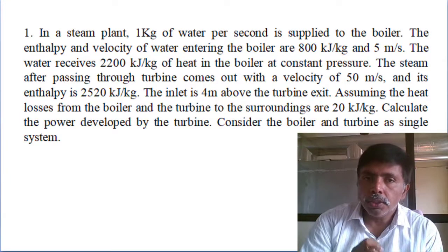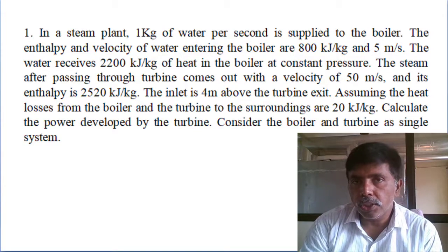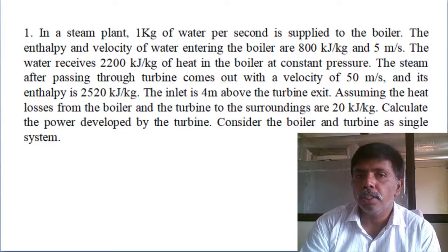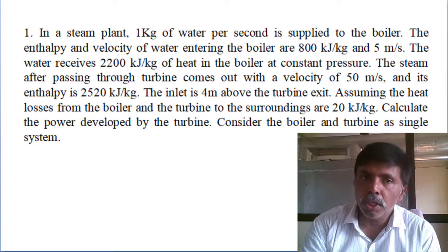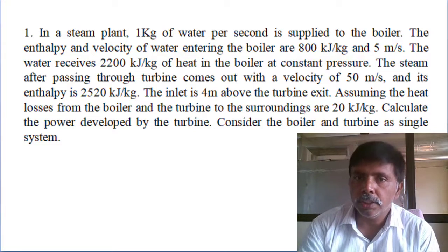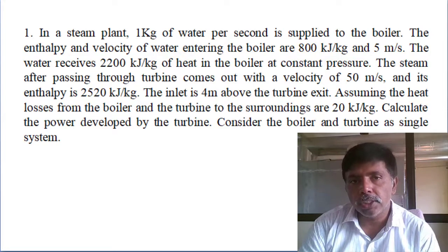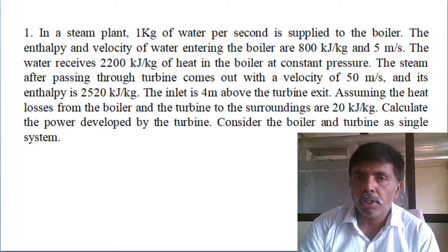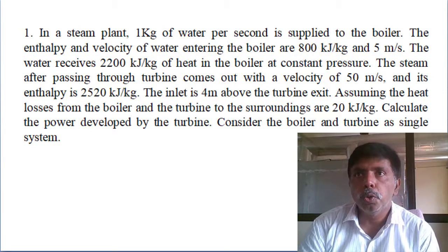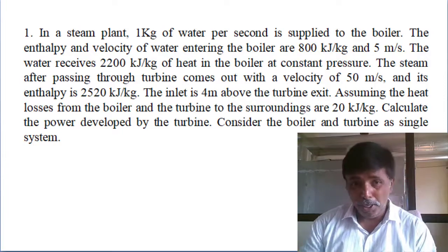The first problem: in a steam plant, 1 kg of water per second is supplied to the boiler. The enthalpy and velocity of water entering the boiler are 800 kilo joules per kg and 5 meters per second. The water receives 2200 kilo joules per kg of heat in the boiler at constant pressure — heat supply is positive.